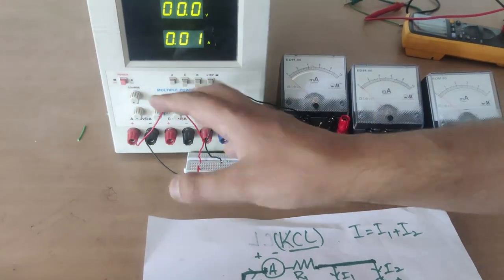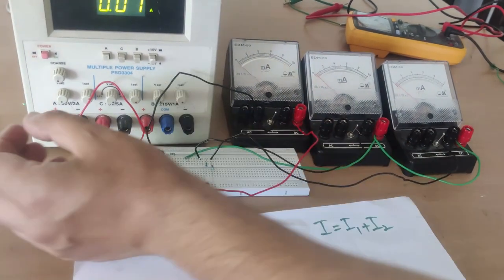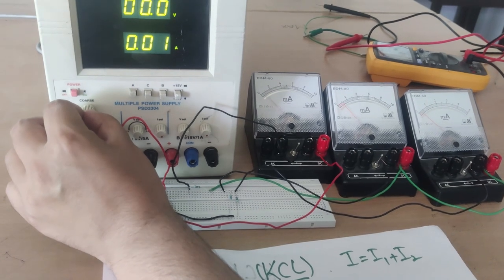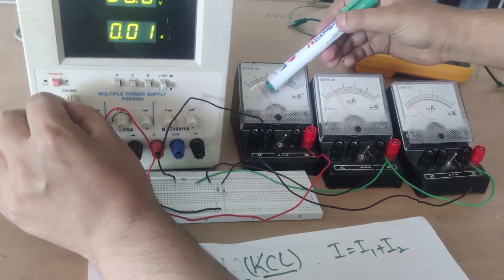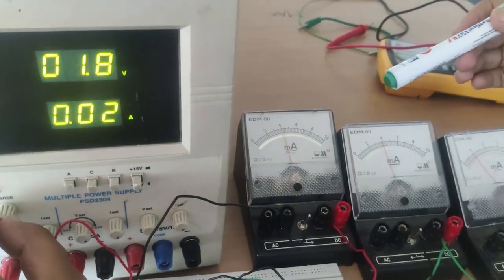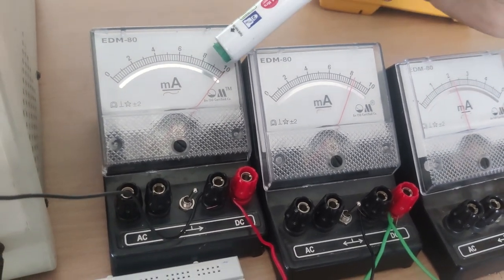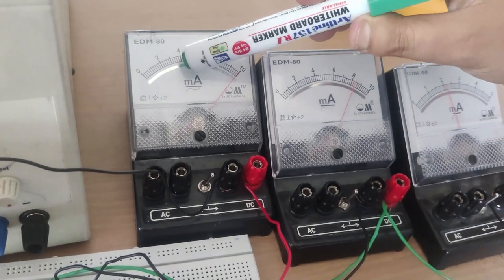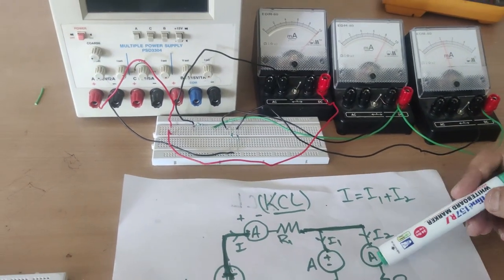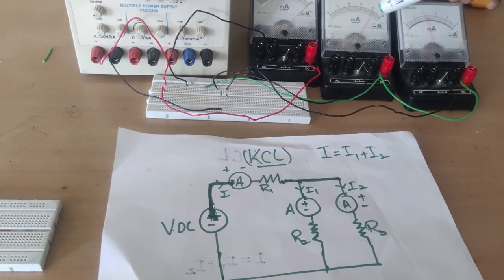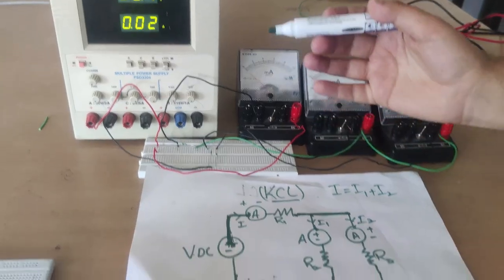The supply is switched on. I can vary the voltage from 0 to 30 volts. You can see how the current varies as I increase the voltage. The total current I should equal I1 plus I2. For example, at 10 milliamps total, you can see I1 is 8 mA and I2 is 2 mA, which gives 8 plus 2 equals 10 milliamps. This verifies Kirchhoff's Current Law.